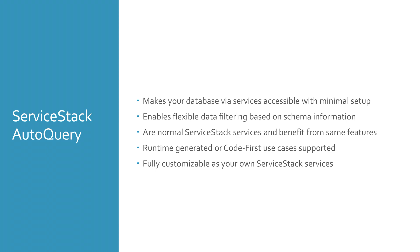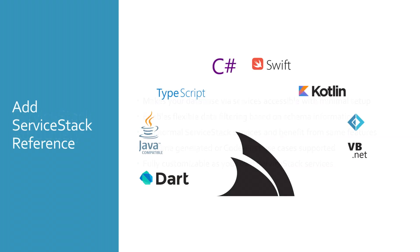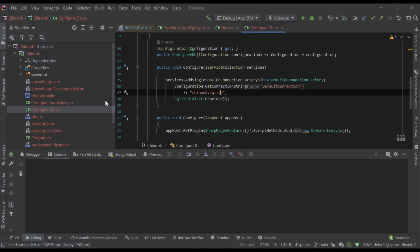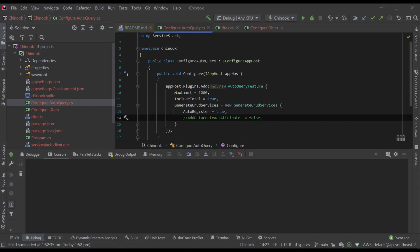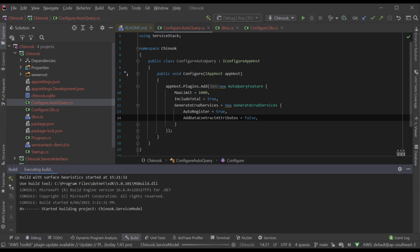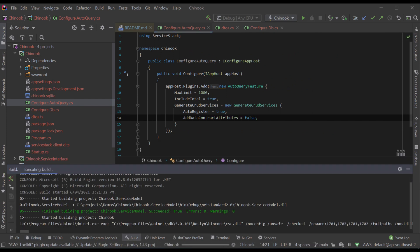With just a bit of configuration, AutoQuery has exposed all the services we need to query and manage our tables in our database. The way this works is ServiceStack's auto-gen feature creates typed ServiceStack services in memory based on the configured relational database schema at startup. Because they're just ServiceStack services, they can take advantage of the ecosystem of features that come with normal ServiceStack services, like Add ServiceStack Reference for generating rich typed APIs around supported languages. To extend and enhance these services, we'll need to convert them into code-first services, since at the moment the model DTOs only exist in memory.